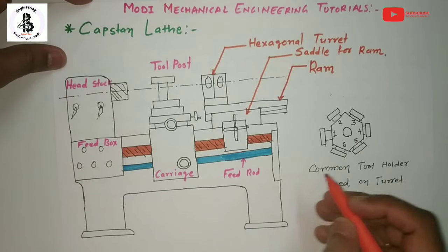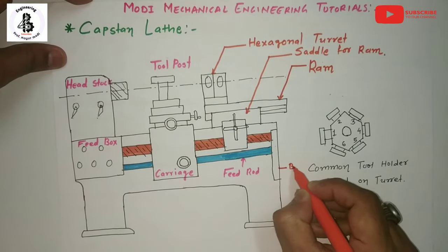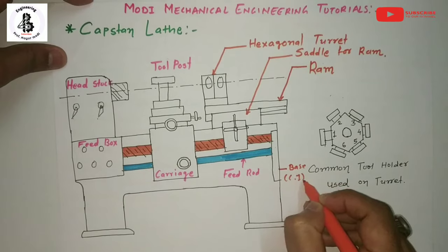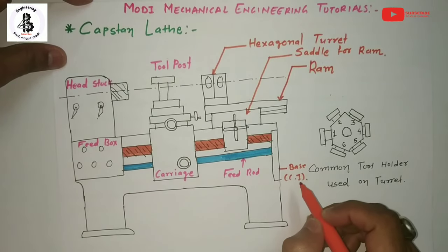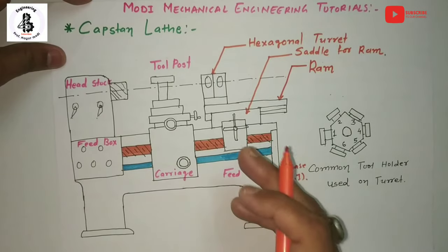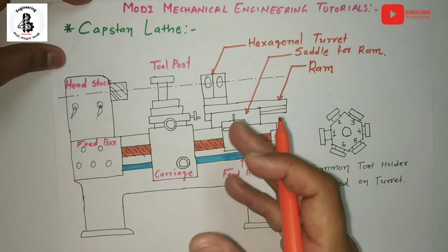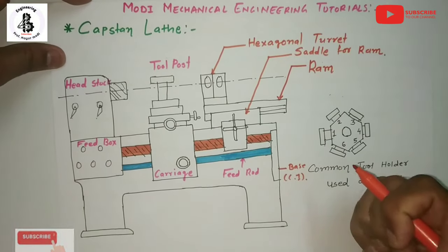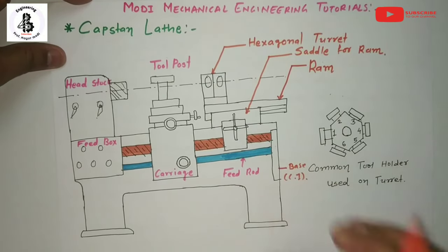Starting with the base — basically the base is made of cast iron material. The base is used to withstand all kinds of vibrations and cutting forces which develop in the machine, giving it a rigid structure.